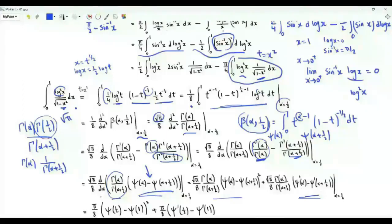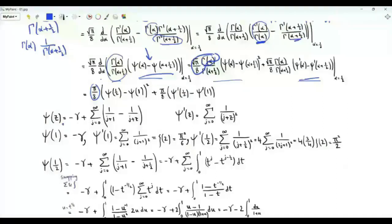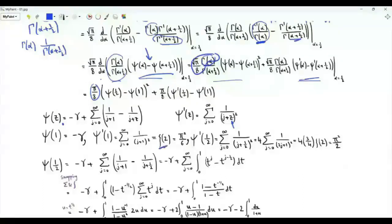The trigamma function is the derivative of the digamma function. Setting α = 1/2, Γ(α) equals Γ(1/2) = √π, and Γ(α + 1/2) equals Γ(1) = 1. We need the digamma and trigamma functions evaluated at 1/2 and at 1. Using the series representation of the digamma function: ψ(z) = -γ + Σⱼ≥₀ [1/(j+1) - 1/(j+z)]. Differentiating with respect to z gives ψ₁(z) = Σⱼ₌₀^∞ 1/(j+z)². Setting z = 1, ψ₁(1) = π²/6, which is ζ(2). Setting z = 1 gives ψ(1) = -γ.